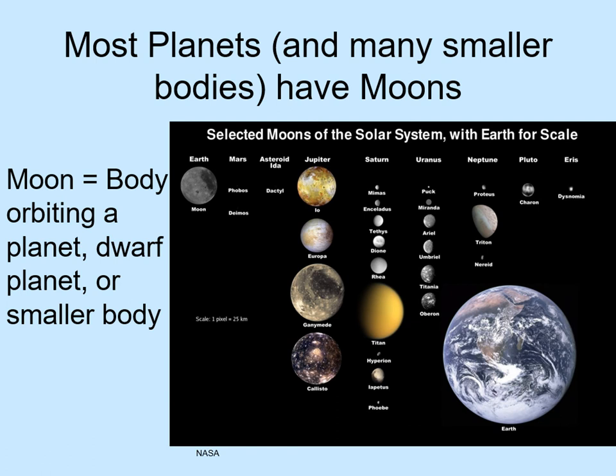Can you identify the two planets that are missing from this list because they don't have moons? It's Mercury and Venus. You'll notice that a few of these moons really stand out as being nearly planet-sized. The Earth's moon is one of those, as are the four big moons of Jupiter and the largest moons of Saturn and Neptune. When we start looking at the planets in detail, we'll study their moons — especially the bigger ones — since these big moons are shaped by a lot of the same things as the planets, so it makes sense to cover them at the same time.